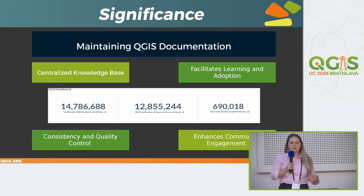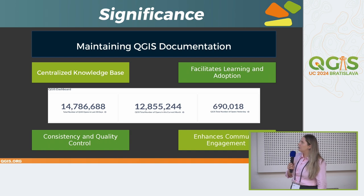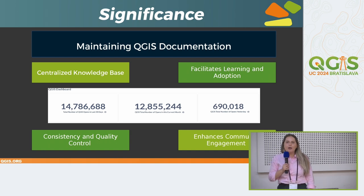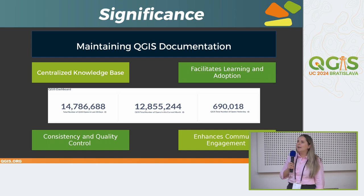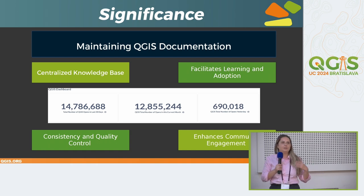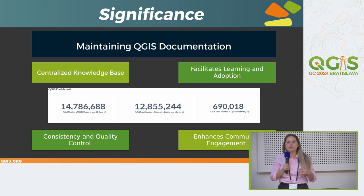We try to promote learning through QGIS documentation and adapt it to everyone. It also provides consistency and quality control — when we write documentation, we need to keep consistency through all the manuals, sections, and chapters. When the writer writes documentation, they need to test new features, new algorithms and options, so that also serves as quality control. If we have very well organized documentation, we can encourage the community to contribute more to the whole project.